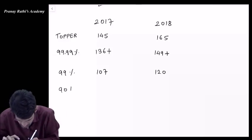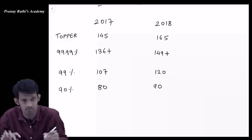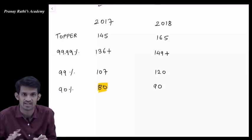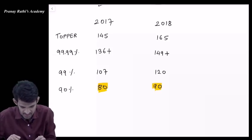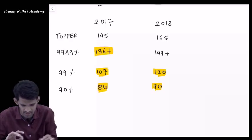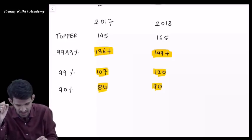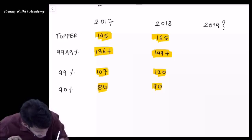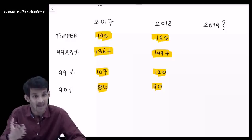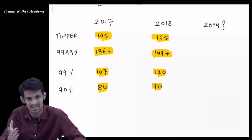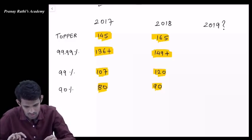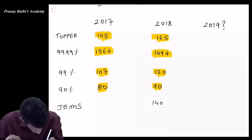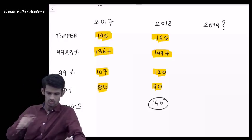Similarly, if you see 90 percentile, in 2017 it was 80 marks, and in 2018 it was 90 marks. For 99 percentile, 107 to 120, that's 13 marks difference. For 90 percentile, 80 to 90, that's 10 marks rise.